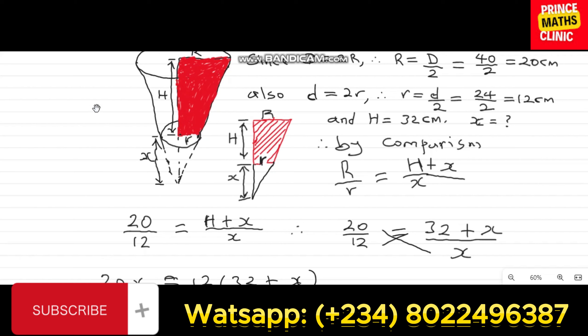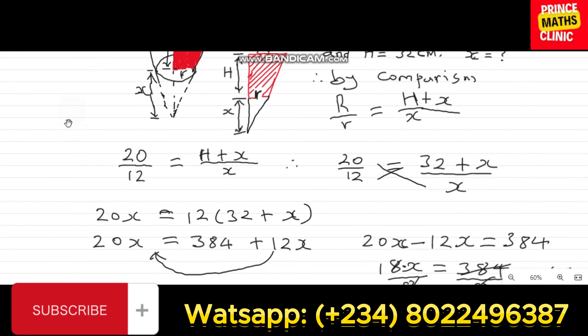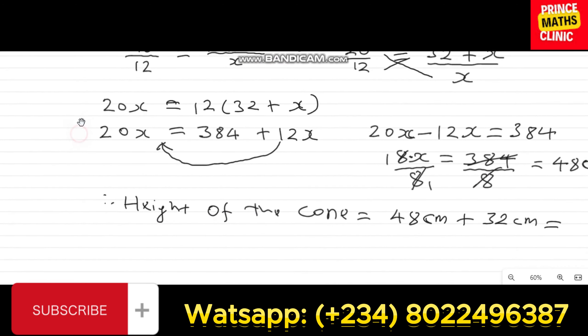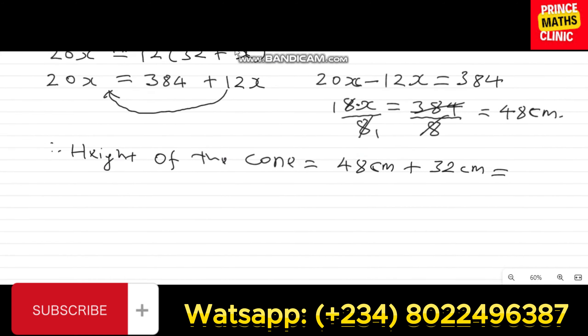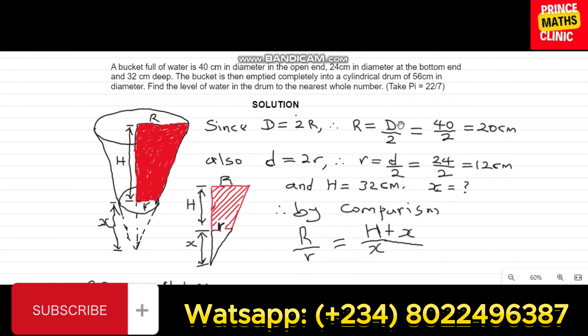So, let's move on. Knowing that that is my full height of the cone. If I add 48 to 32, I'm going to obtain 80. So, 80 centimeters is the height of the cone.